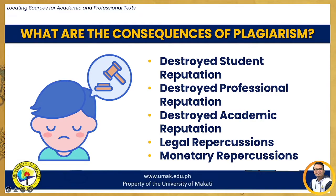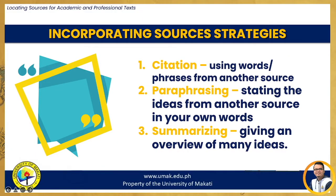Plagiarism can take many forms, from deliberate cheating to accidentally copying from a source without acknowledgement. Consequently, whenever you use the words or ideas of another person in your work, you must always acknowledge where they came from. In academic and professional writing, it is important to properly incorporate your sources; otherwise, they would appear as though they have been dropped into the writing. The main reason you use citations is to give credit to other people's work, avoiding charges of plagiarism and separating your words from the words of others. Here are three common strategies for incorporating sources: citation, paraphrasing, and summarizing.